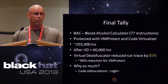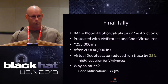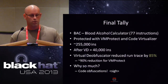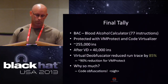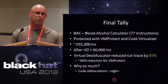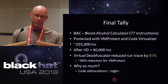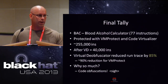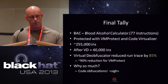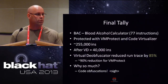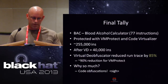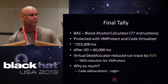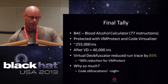At this point I'm looking at Themida, Code Virtualizer, and VM Protect, and the results are great. But I wanted something more interesting than handcrafted assembly code, so I used a blood alcohol calculator program — 77 instructions — that tells you how many drinks before you're legally drunk. When I ran it through VM Protect and Code Virtualizer, it bloated to around 255,000 instructions. When I ran the virtual deobfuscator on it, I was left with 40,000 instructions — an 85% reduction. But I really wanted it to be closer to 77.